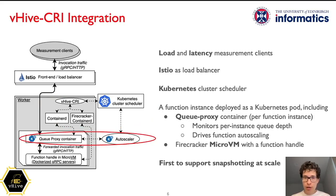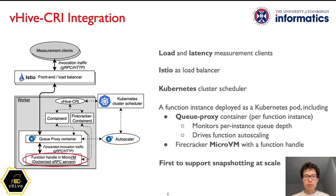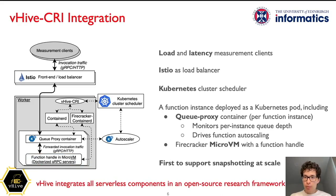On the worker, the invocation first comes to a QProxy container deployed for each function. This container monitors the depth of the request queue in front of each function instance. The QProxy then reports this information to the Knative Autoscaler service that makes scaling decisions. After that, QProxy forwards the request to a function instance that runs inside the microVM. The functions are deployed as gRPC servers with user-provided handles that perform the actual work. Finally, to bring VHive to the cutting edge of today's serverless systems, we added snapshotting support to Firecracker ContainerD.